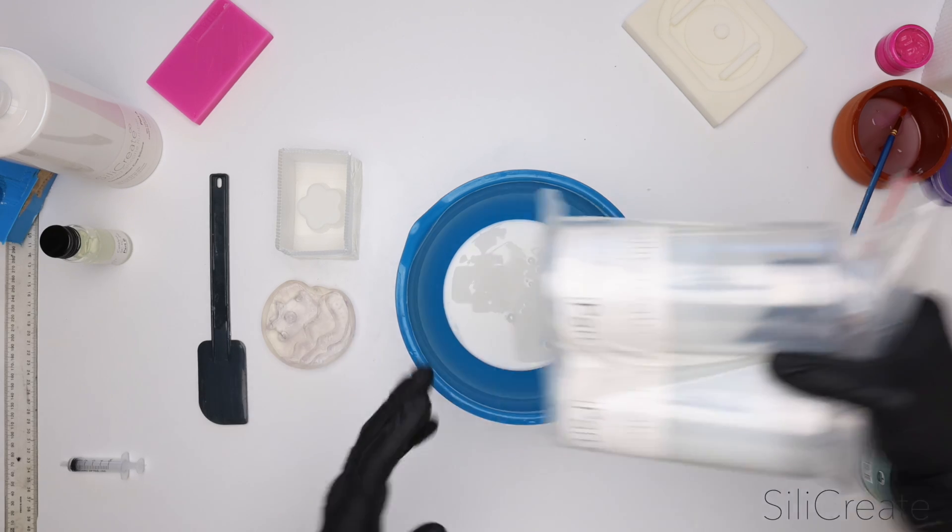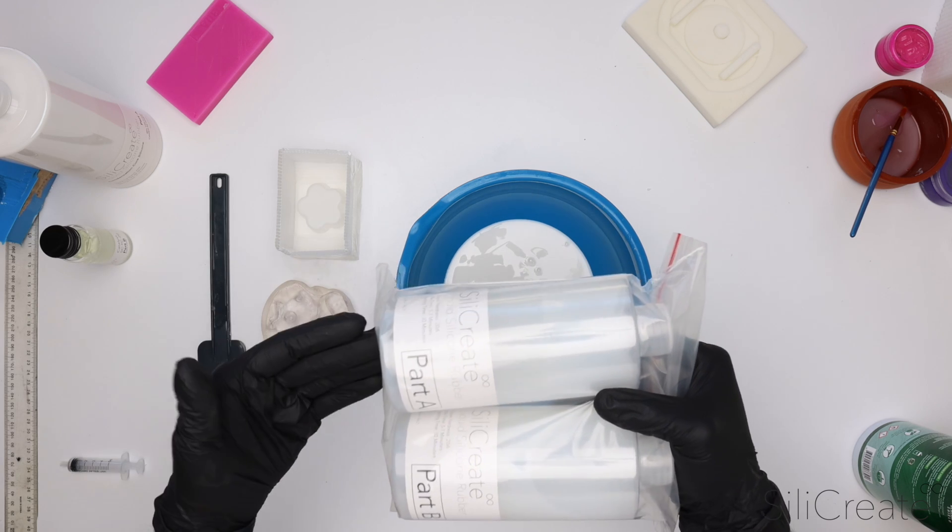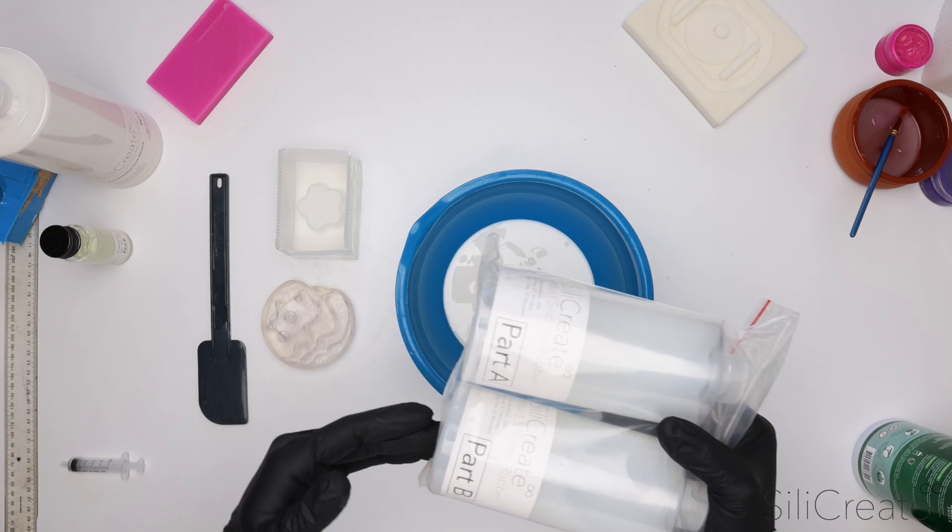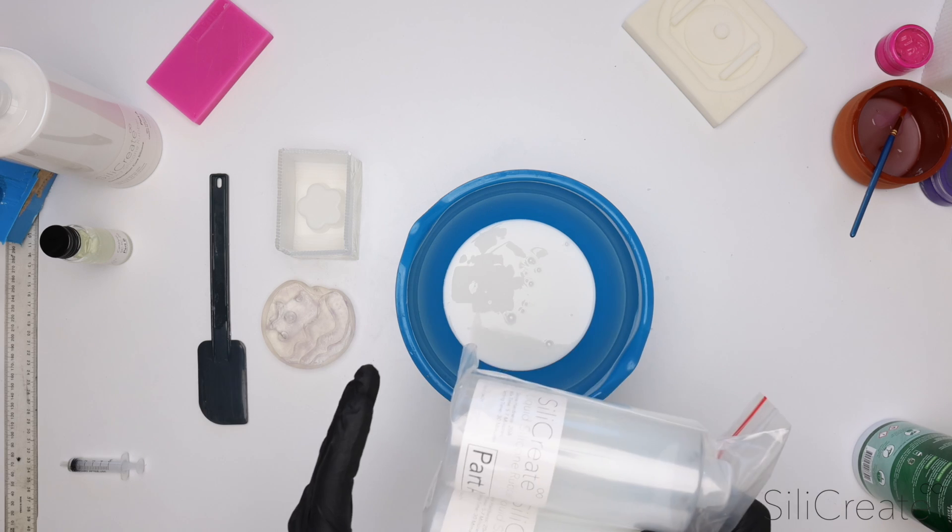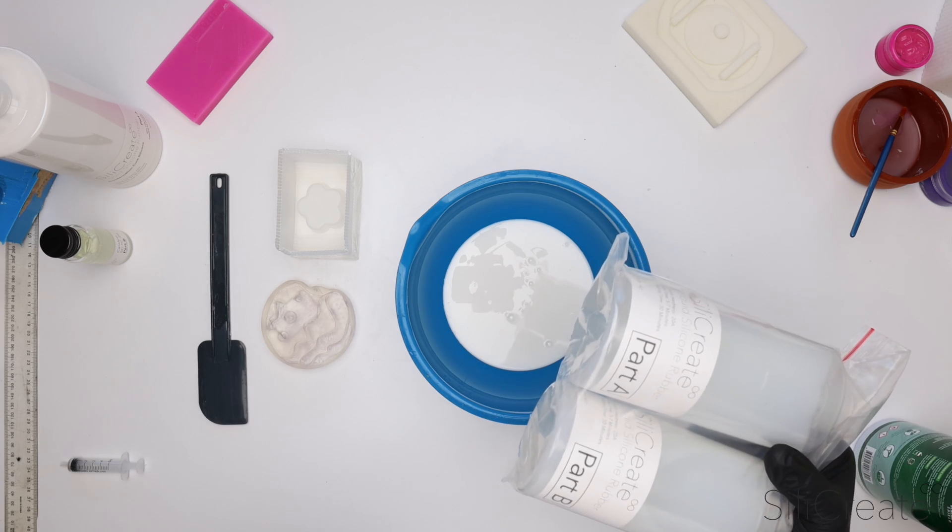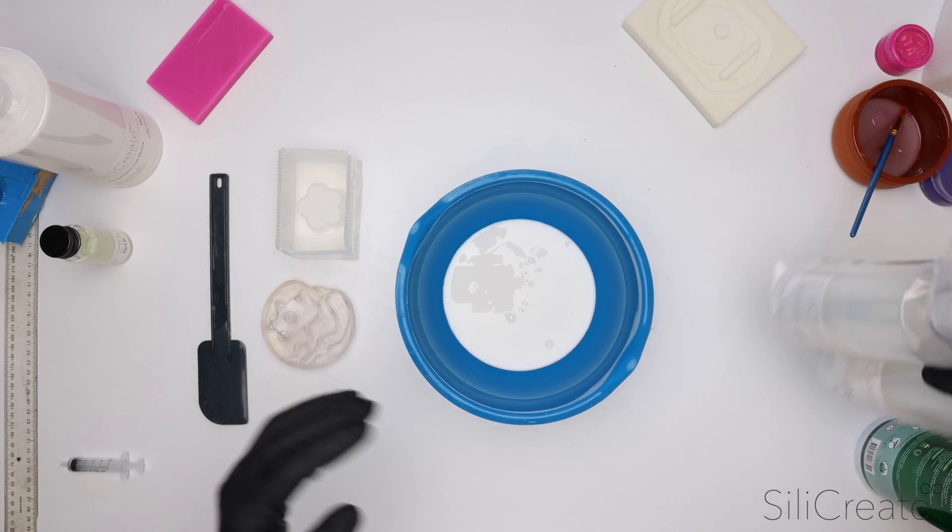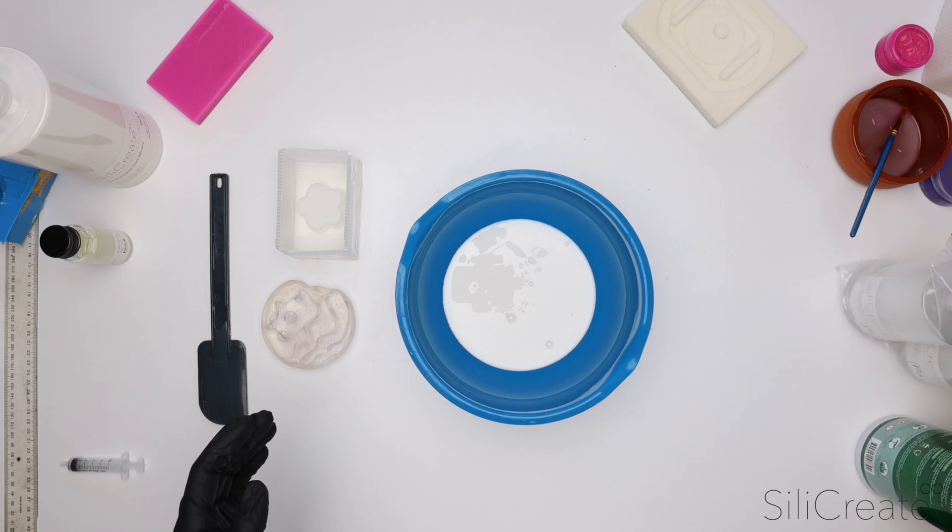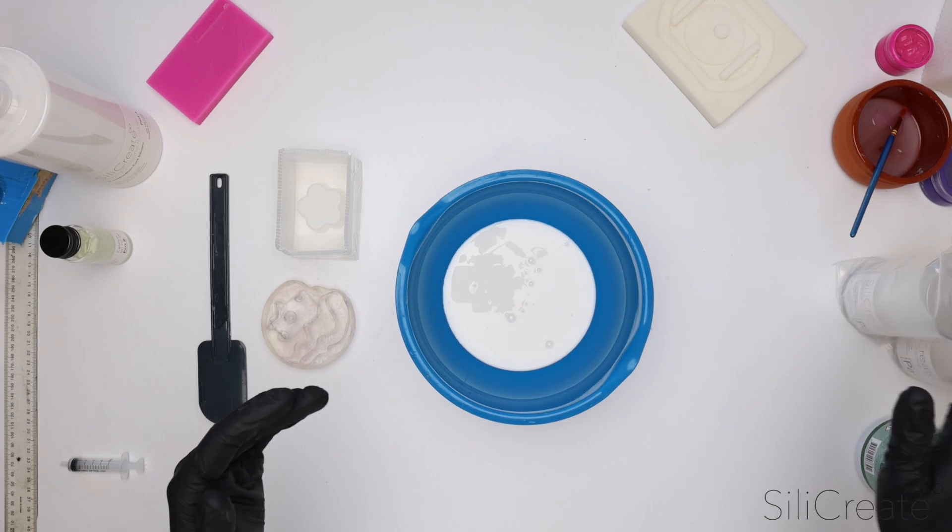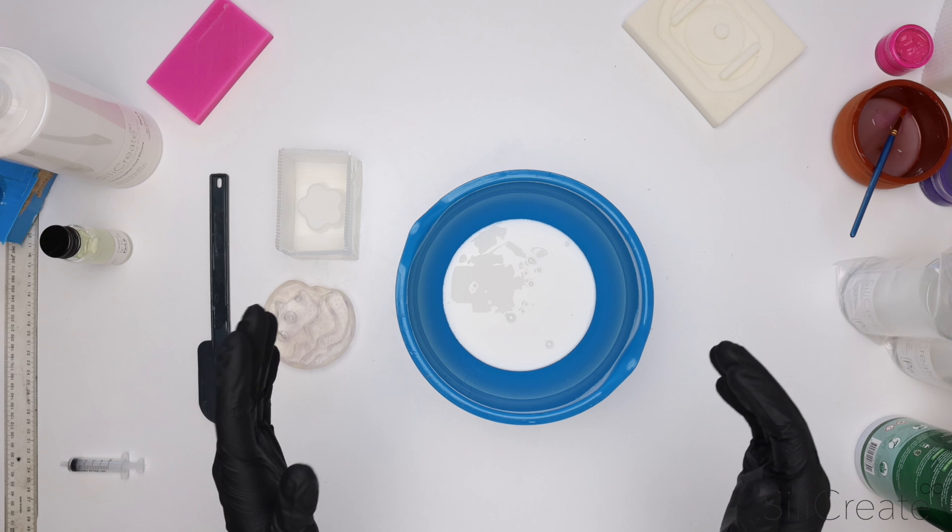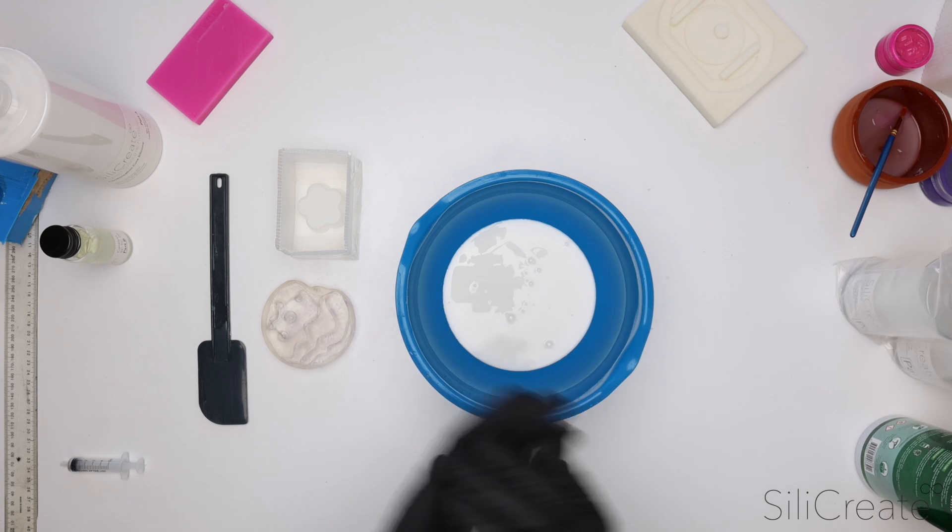On the other hand, for platinum cure, you've got say one kilogram made up of 500 grams of the A and 500 grams of the B. You mix these together one to one, and that is what cures your silicon. You might sometimes have ratios that aren't one to one, like one to ten, but generally for platinum cure the standard configuration is one-to-one. That's all of the ones that we currently sell and a lot of the other ones out there on the market.